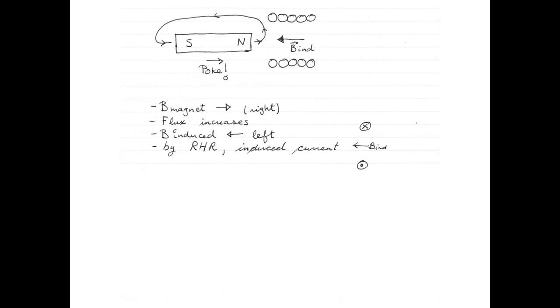So we have the direction of the induced current. Using the direction of the induced magnetic field, I can also determine the magnetic poles of the solenoid.